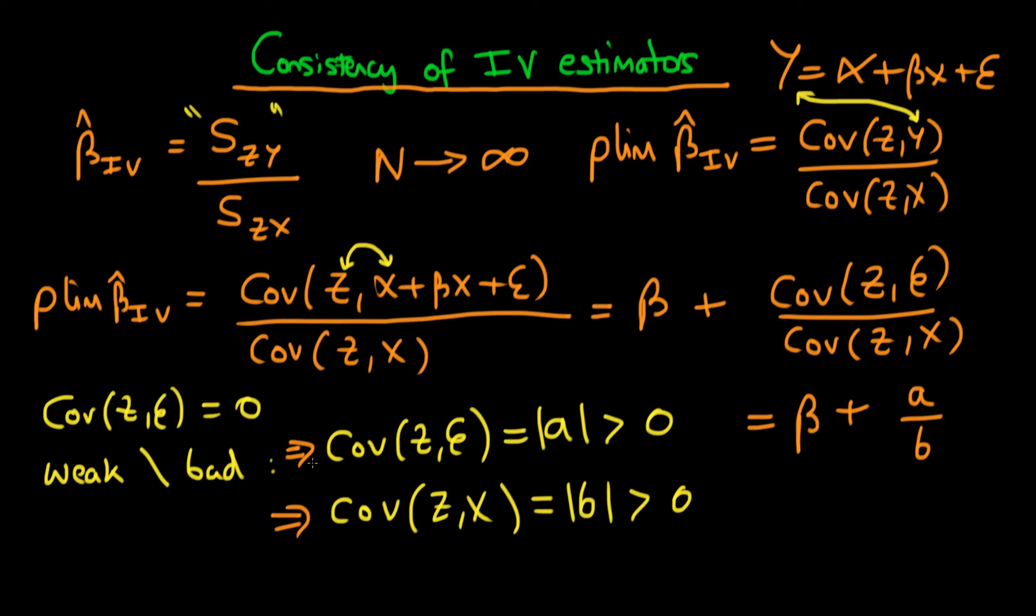in principle can amplify any slight deviation from our instrument not being a perfect instrument, in the sense that any slightly bad aspect of our instrument is going to get amplified a lot by the fact that we're having a weak instrument. Because we're taking essentially how bad our instrument is, which is this A term here, and we're dividing it through by B here. So if B is very, very small, then you can see that A over B is large.